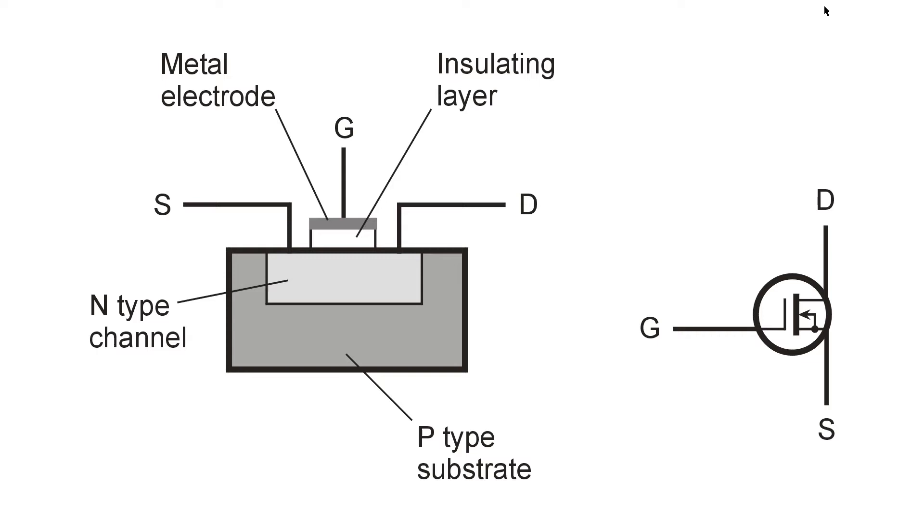The device is just about the same as an ordinary field effect transistor. I'm showing an N-channel device here, but it could just as well be a P-channel device. You just reverse all the N's and the P's and reverse the direction of this arrow in the schematic symbol.